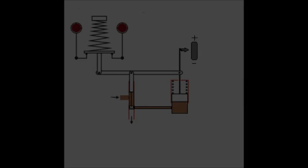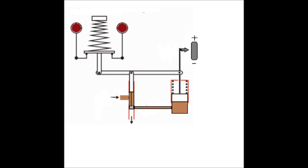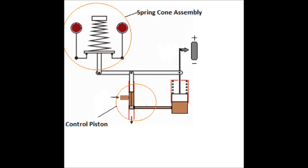Governor is a device which is used to control the flow of fuel to an engine at different loads. Here is a basic working diagram of a hydraulic governor which consists of a spring cone assembly, a control piston, a power piston, and a fuel rack.